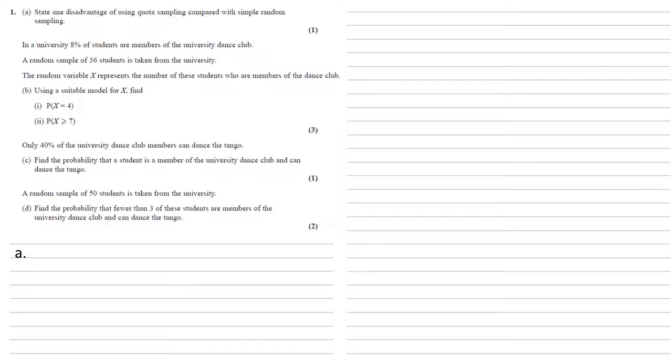For Question 1a, we just need to state one disadvantage of using quota sampling compared with simple random sampling. So a nice simple one to start with. The reason is just that the selection in quota sampling isn't random.